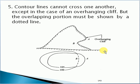Control lines cannot cross one another except in the case of an overhanging cliff, but the overlapping portion must be shown by a dotted line.